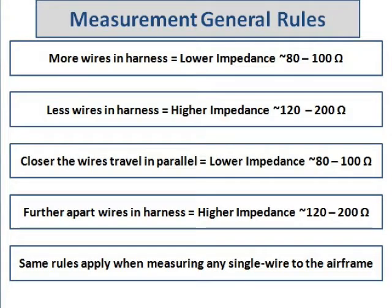The next slide is a chart on how that impedance is affected by changes in the harness. Wires measured in a larger harness will have a lower overall impedance. Smaller harnesses, or when the harness splits down to a separate smaller harness, that impedance will rise. Additionally, the impedance of the two selected wires to measure will vary as they get closer or further apart during their run through the harness. These rules apply to measuring a single wire to the airframe as well.